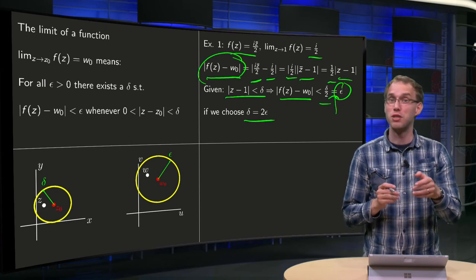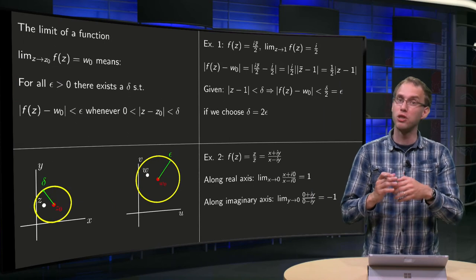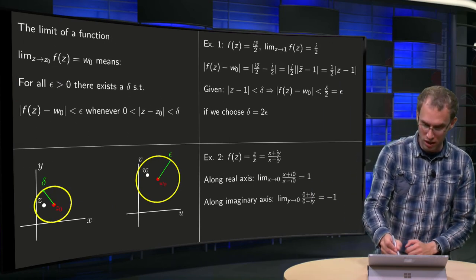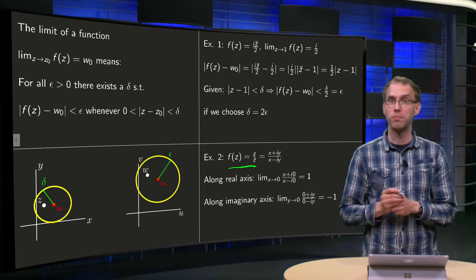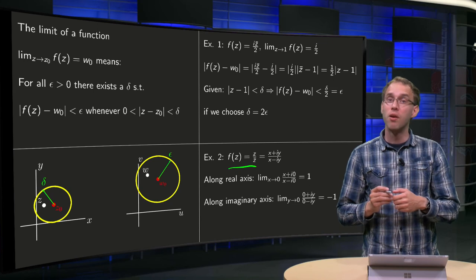Actually, showing that the limit exists is much harder than showing that the limit does not exist. Because how can you show that the limit doesn't exist? Well, let's look at the second example of z/z̄, which is x + iy divided by x - iy.